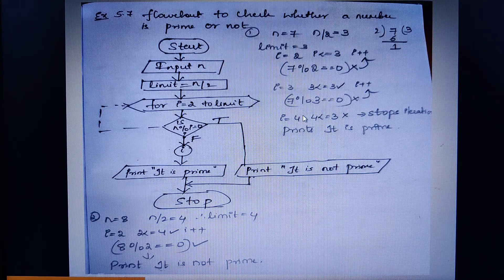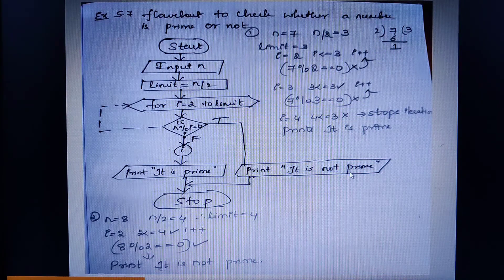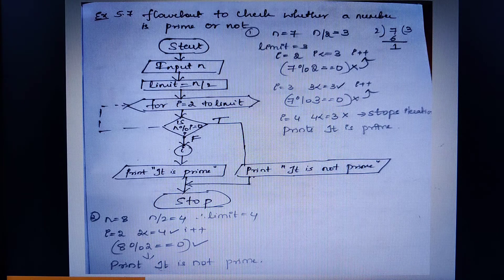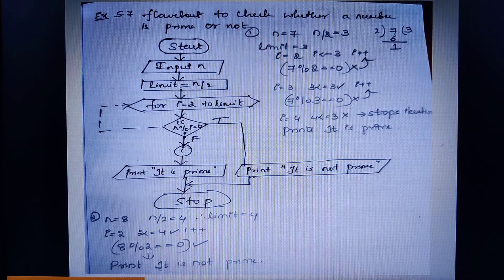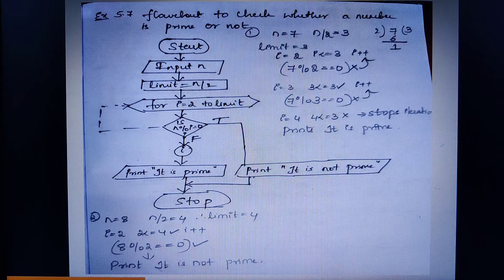Before we start with the flowchart, let us understand how to find out whether a number is prime or not. Suppose if I give the number 14 as input, it shouldn't have any integer divisors — that means the number 14 shouldn't be divisible by any other number except one and itself.